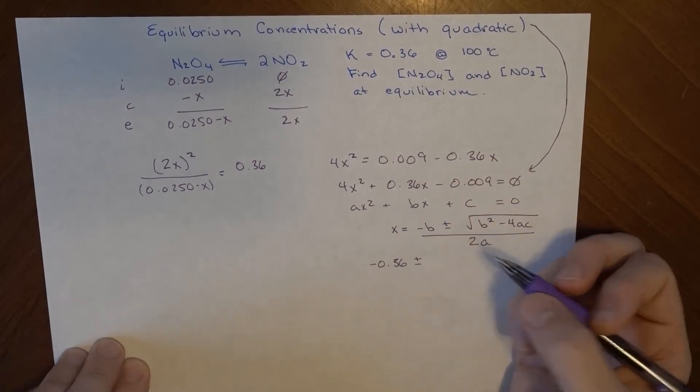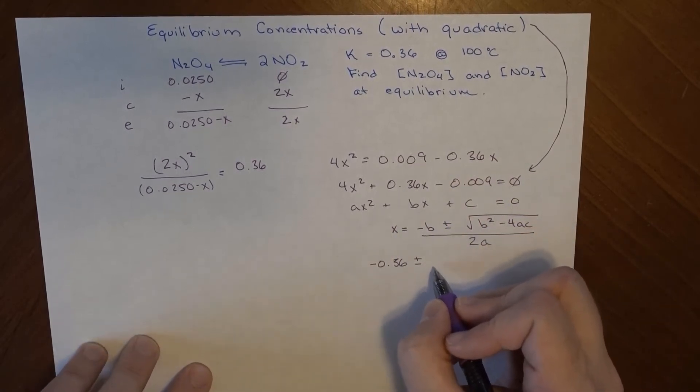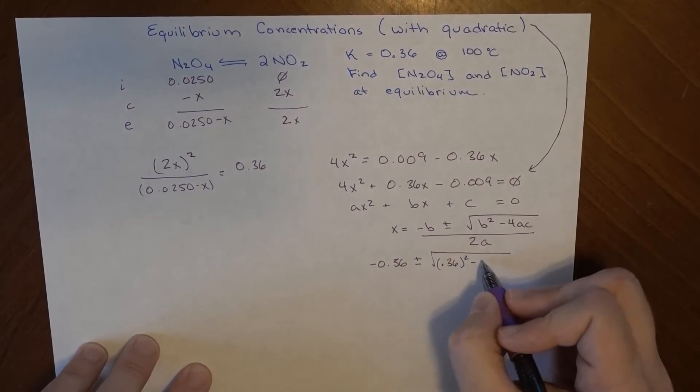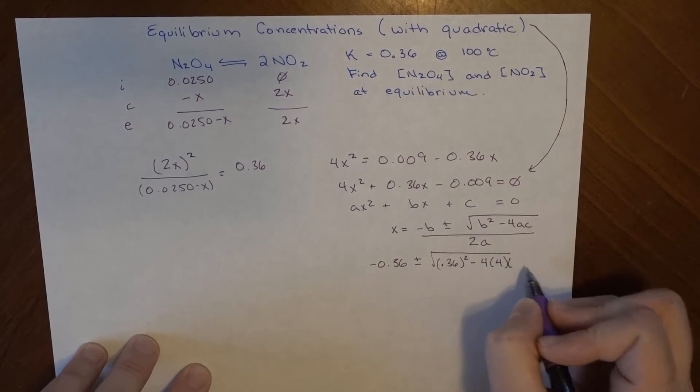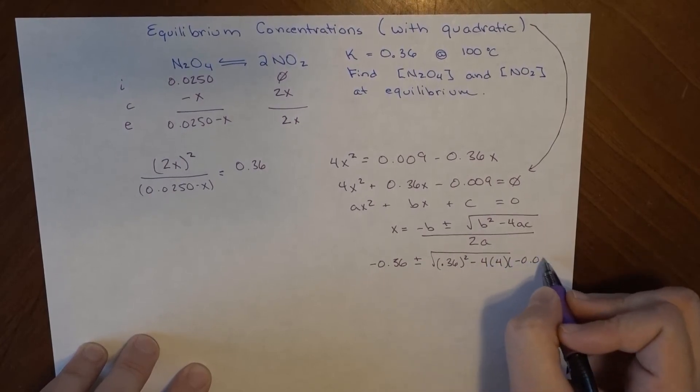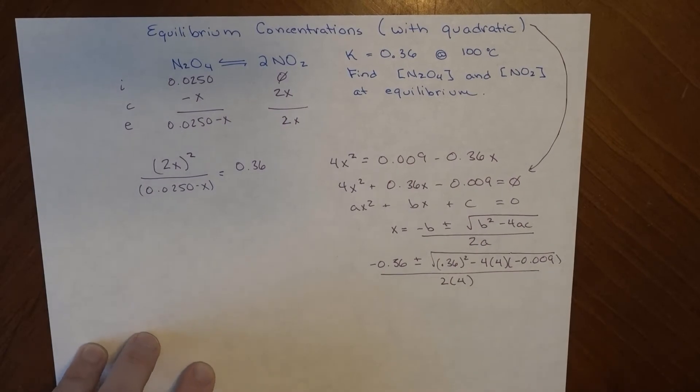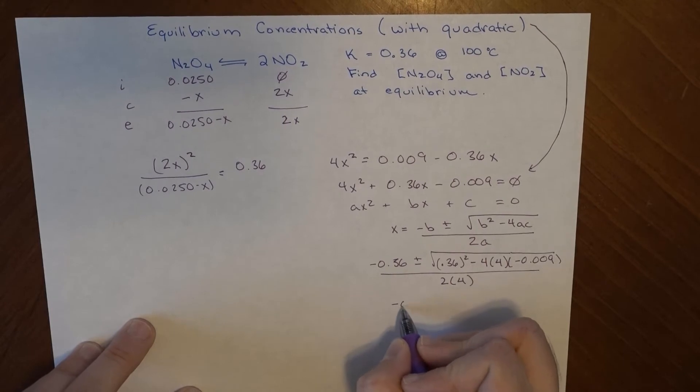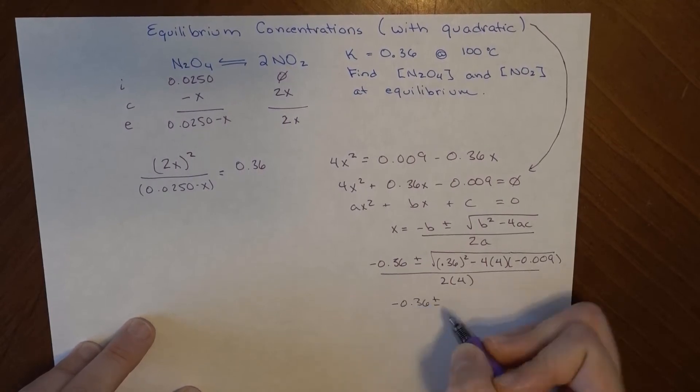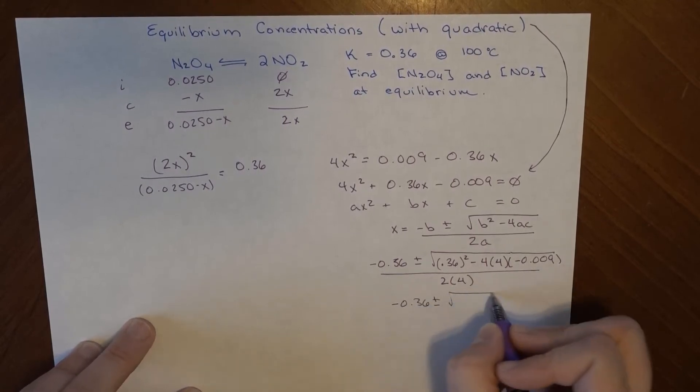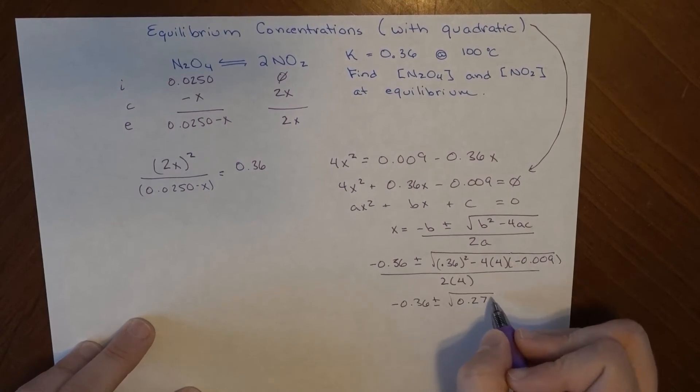Plus or minus, we don't know really which one's going to be most useful yet. b squared, so that's 0.36 squared, minus 4 times 4 times negative 0.009, all over 2 times 4. You're going to have to do some crunching in your calculator to get to that. Simplifying this a little bit, negative 0.36 plus or minus the square root of 0.2736 over 8.